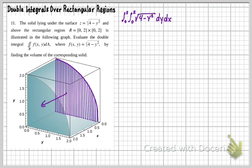We're going to do the dy first because we work from the inside out. So the first step is to evaluate the inner integral from 0 to 2 of the square root of 4 minus y squared. What I see right away is a trig substitution.